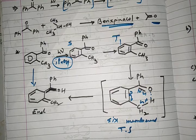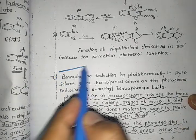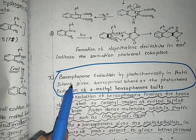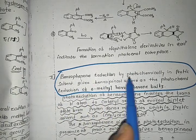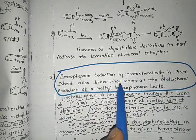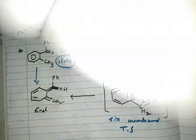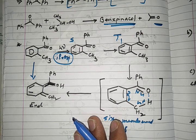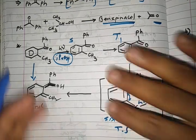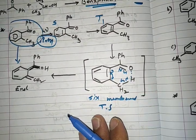Another common exam question: benzophenone undergoes photochemical reduction in a protic solvent to give benzophenacol, whereas photochemical reduction of ortho-methyl benzophenone fails. The answer is that in ortho-methyl benzophenone, photoenolization is the predominant reaction due to formation of the six-membered transition state.